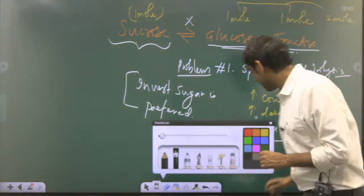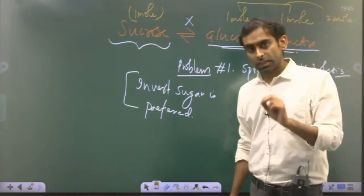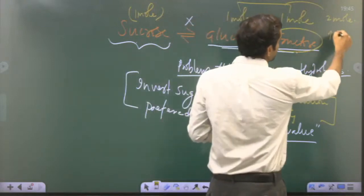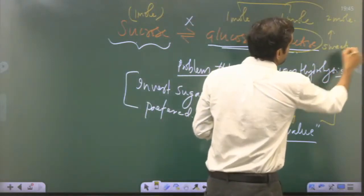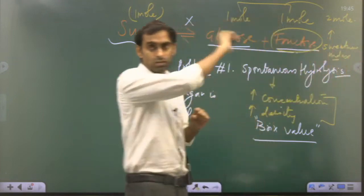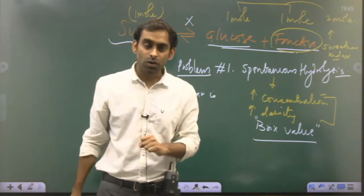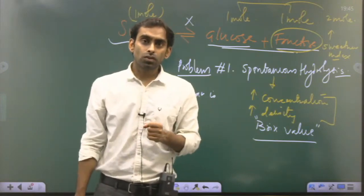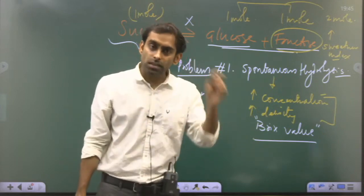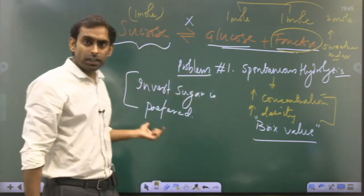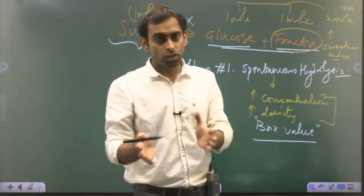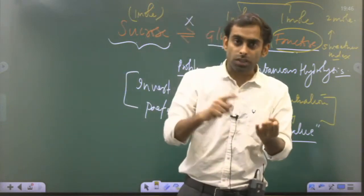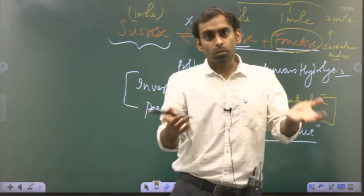There is one more reason to prefer invert sugar: if you compare sweetness indices, fructose has a higher sweetness index compared to sucrose. Think about honey — honey is richer in fructose and is sweeter than plain sugar for the same amount. So the sweetness index of fructose and honey is higher. This is another advantage: using invert sugar produces a sweeter product.